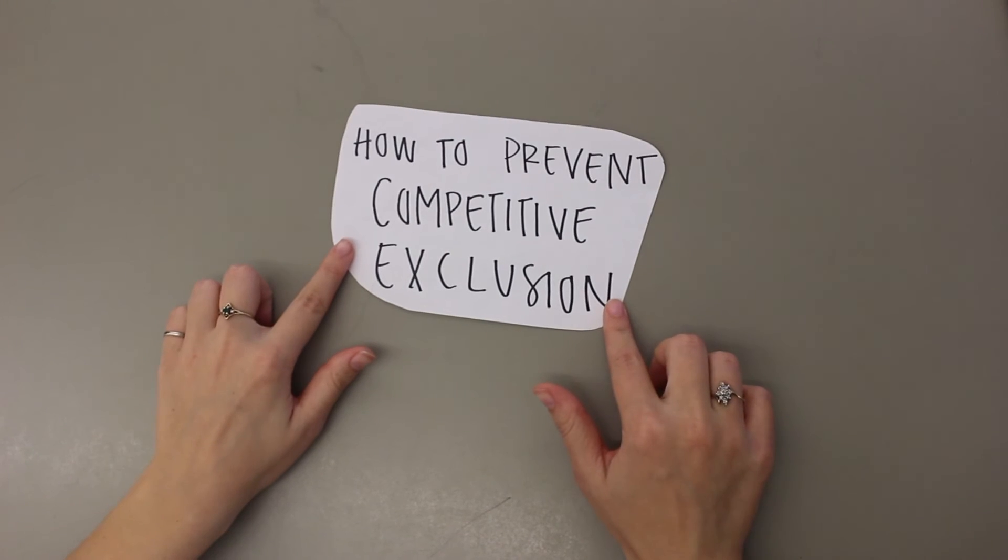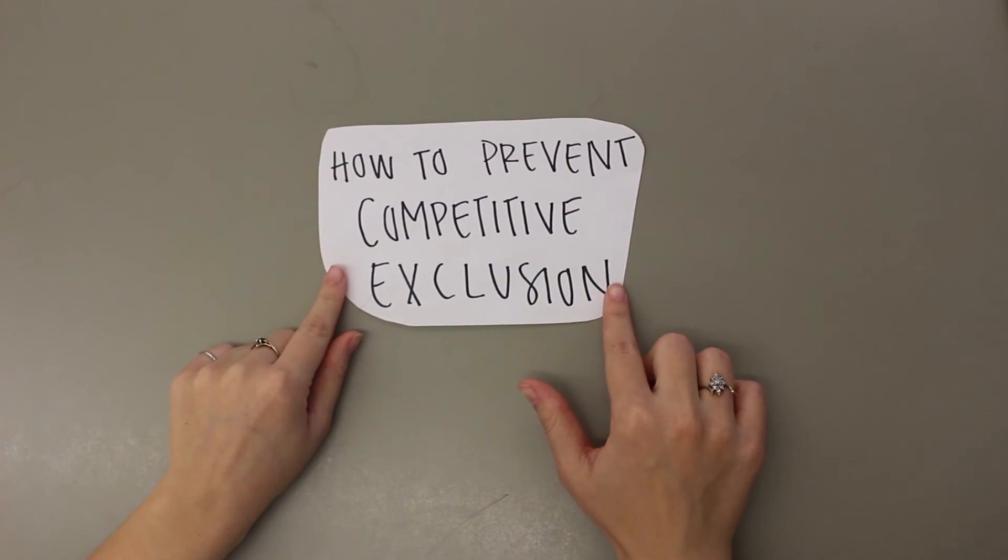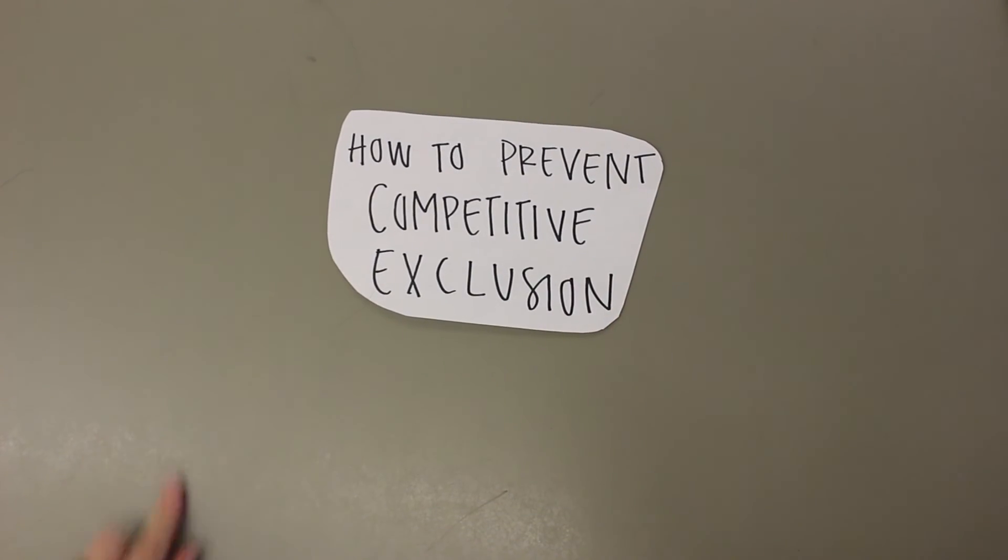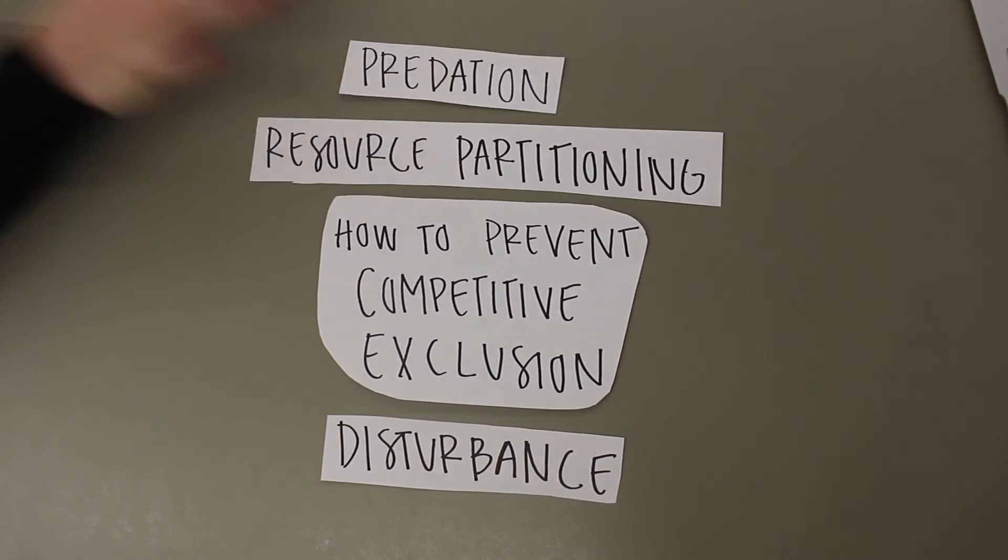Since competition has a negative effect on both species, it is important to prevent competitive exclusion so several species do not go extinct. There are several types of preventions for competitive exclusion, such as resource partitioning, disturbance, predation, and evolution.